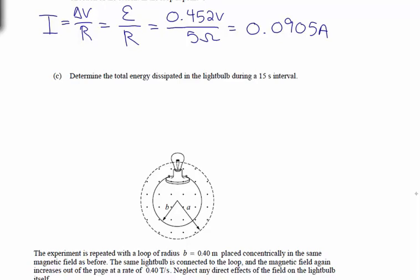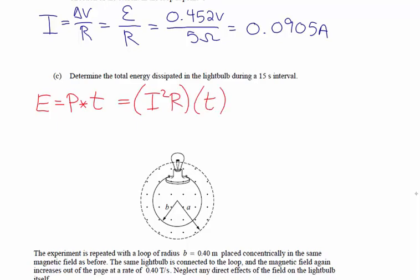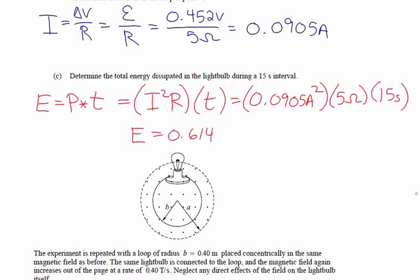Part C asks for the total energy dissipated in the light bulb during a 15-second interval. Energy is power times time. The power is current squared times resistance, so the energy is 0.0905 amps squared times the resistance of 5 ohms times 15 seconds, giving an energy dissipated of 0.6143 joules.